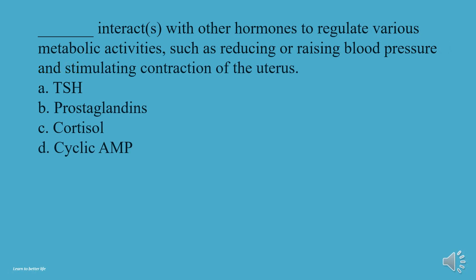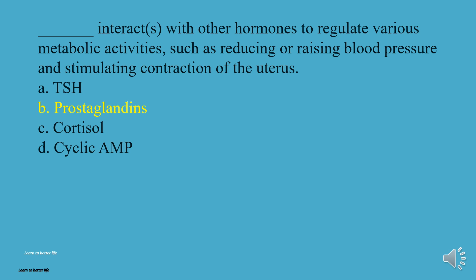What interacts with other hormones to regulate various metabolic activities, such as reducing or raising blood pressure and stimulating contraction of the uterus? A, TSH. B, Prostaglandins. C, Cortisol. D, Cyclic AMP. The answer is B, Prostaglandins.